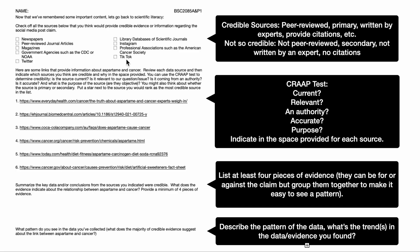Here we have a list of potential sources and you are going to identify those that you think would provide credible evidence. Credible sources tend to be peer-reviewed — in science we love peer-reviewed sources. We love primary sources: things written by the person who did the research. We want them to be written by experts — people who are trained and experienced in that particular area. Good sources should also provide citations for any information that isn't coming directly from their own research.